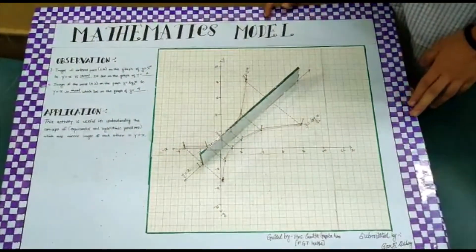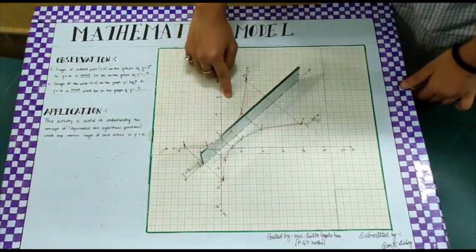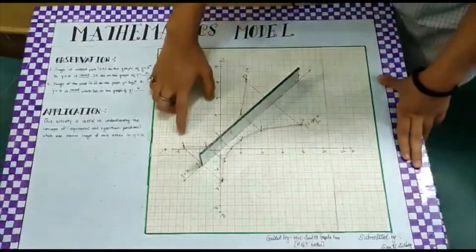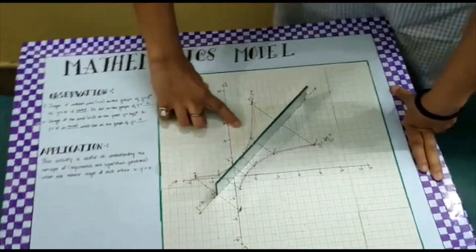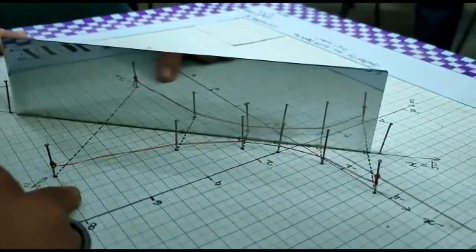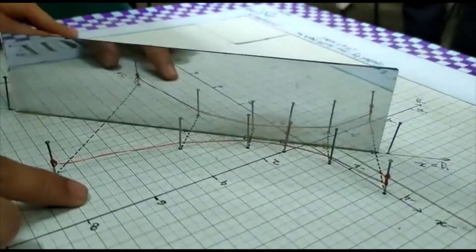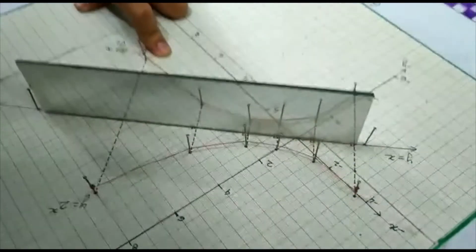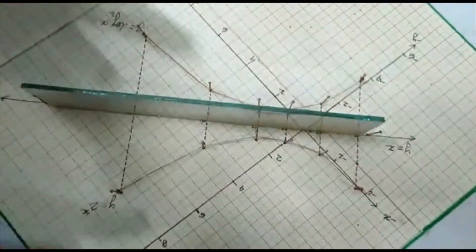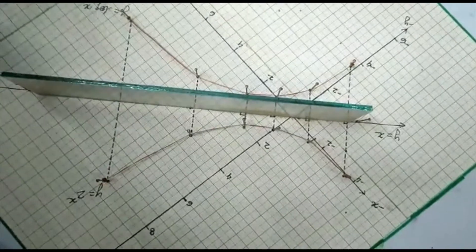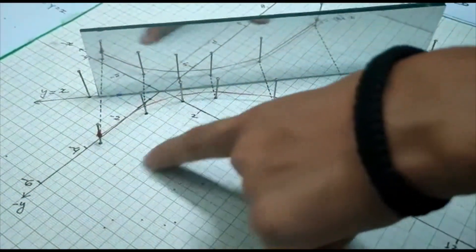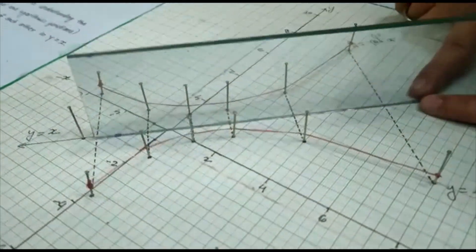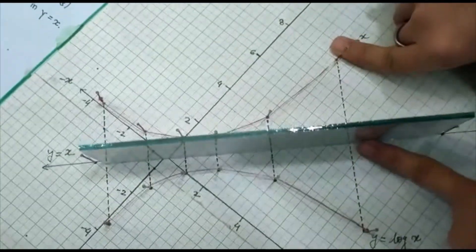I am going to explain that the exponential function curve and logarithmic function curve are mirror images of each other. We can see that this curve represents the exponential function curve, and this curve shows the logarithmic function curve. Both are mirror images of each other. We can also see that the logarithmic function shows the mirror image, and it looks like the exponential function.